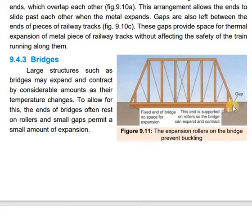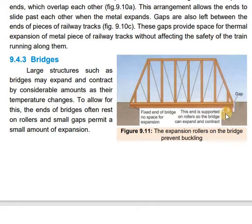The advantage of those rollers is that in summer, when the bridge expands, it will fill that gap; and in winter, when it contracts, a small gap will appear. If the end of the bridge is not attached on expansion rollers, bridges can become bent or buckled, and the chances of them breaking increase significantly.